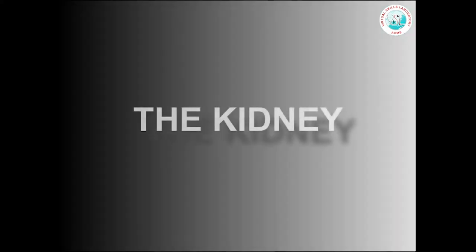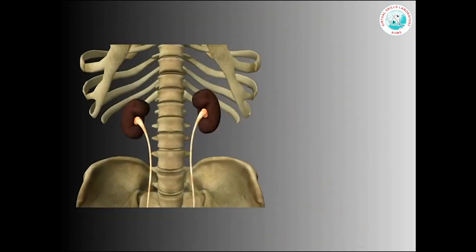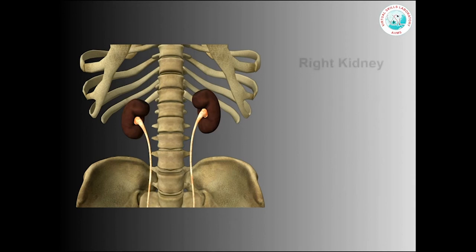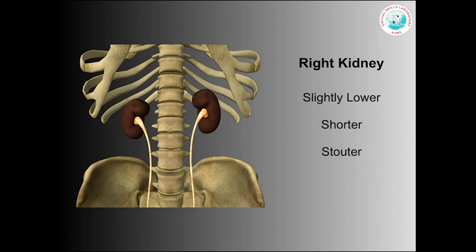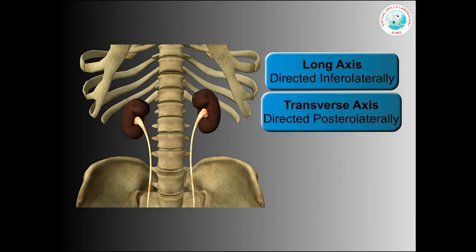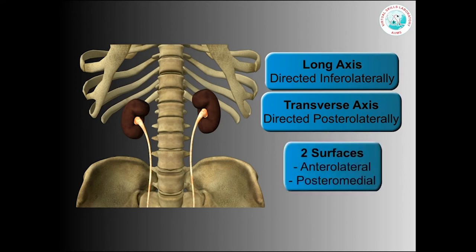First, we will talk about the kidneys. The kidneys are reddish-brown, bean-shaped retroperitoneal organs. They are placed on the posterior abdominal wall on either side of the vertebral column between the 12th thoracic and 3rd lumbar vertebra. The right kidney is slightly lower than the left kidney because of the large right lobe of the liver and is also slightly shorter and stouter than the left kidney. The long axis of the kidney is directed infralaterally along the border of psoas major muscle and the transverse axis is directed posterolaterally, giving it two surfaces: the anterolateral and the posteromedial surface.